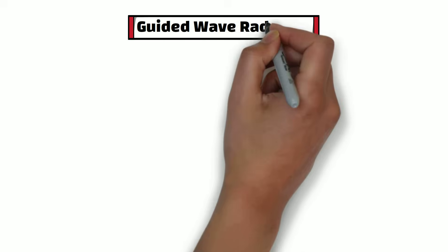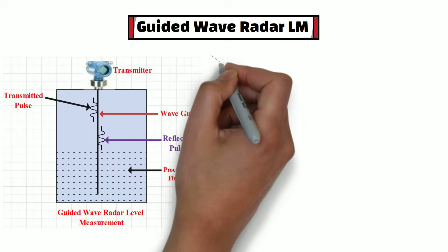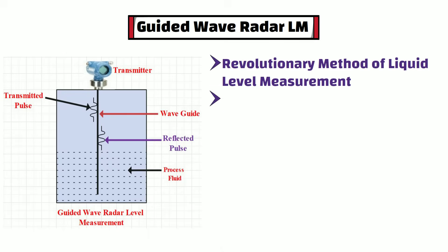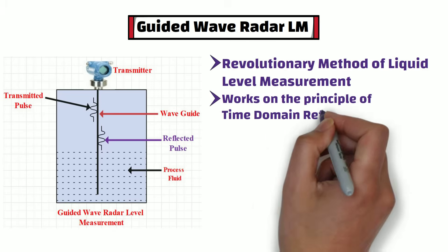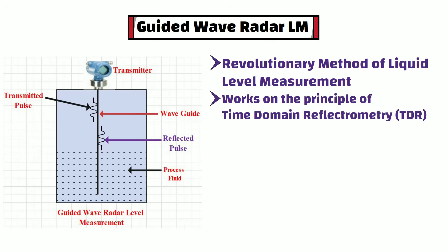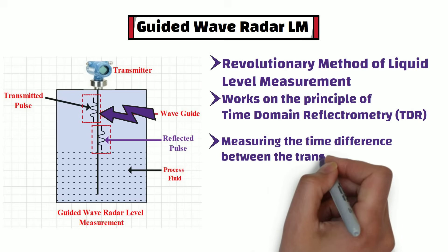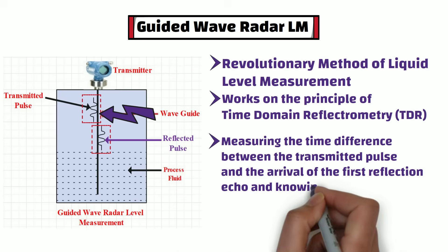The other type is guided wave radar level measurement. This is a revolutionary method of liquid level measurement, and it works on the principle of time domain reflectometry, also known as the TDR method. In the TDR method, a pulse is transmitted to the measurement vessel using a cable or rod. The pulse signal is reflected by the medium surface and received by the processing electronics. The distance of the reflecting surface can be calculated by measuring the time difference between the transmitted pulse and the arrival of the first reflection echo, and knowing the speed of light.